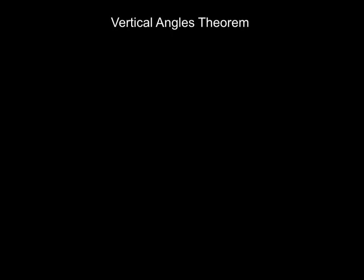In other words, if I have a pair of lines like this, we just made two sets of vertical angles. Angle 1 and 2 are directly across from each other, and as a result, those angles, because they're formed by two intersecting lines, those angles are congruent.